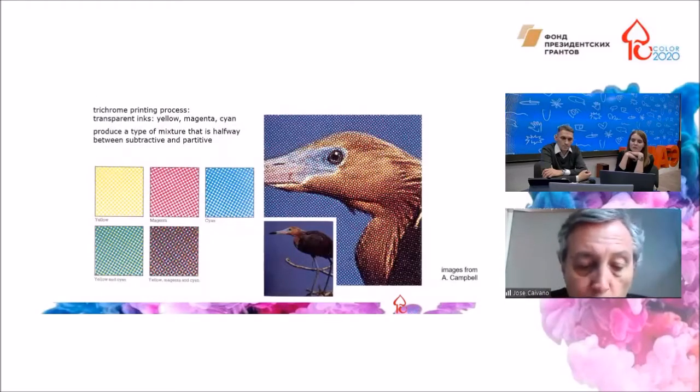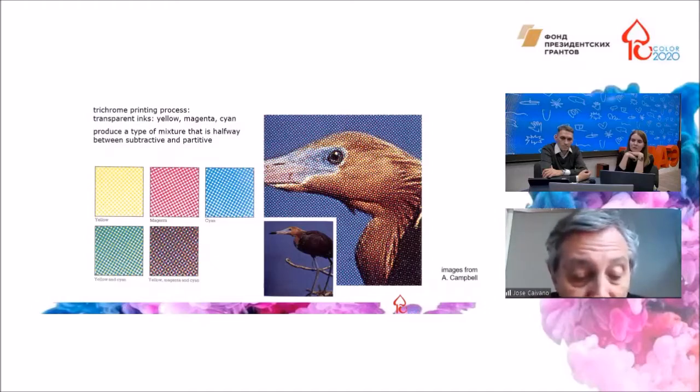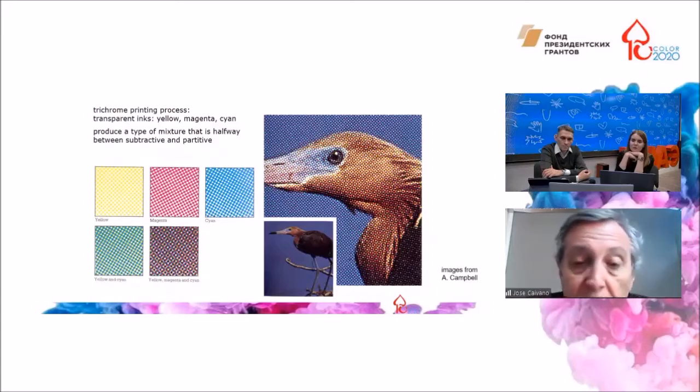Another case. The trichrome process of printing with transparent inks, yellow, magenta, and cyan, produces a mixture that is halfway between partitive and subtractive.